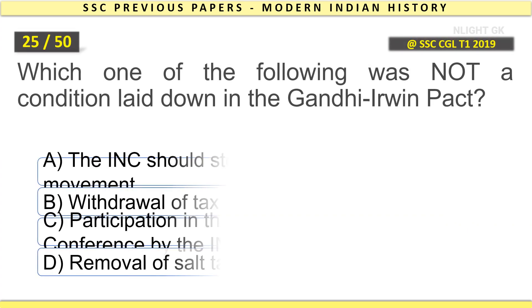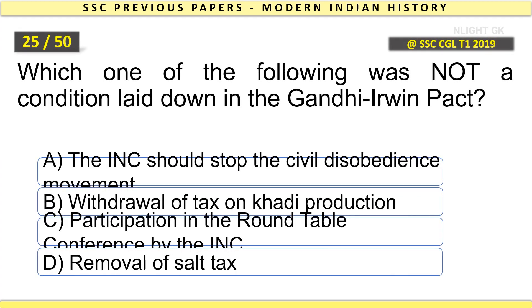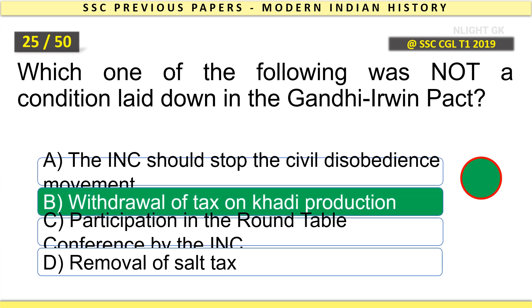Which one of the following was not a condition laid down in the Gandhirwin Pact? Withdrawal of tax on Khadi production.